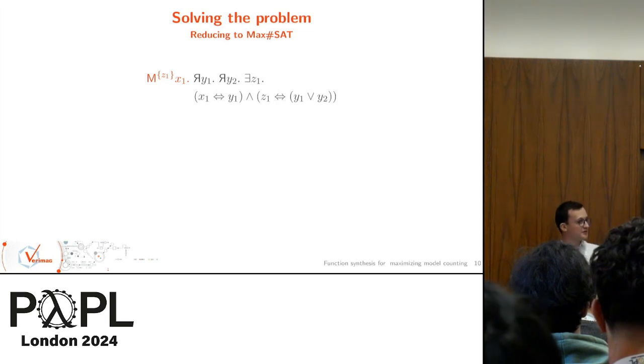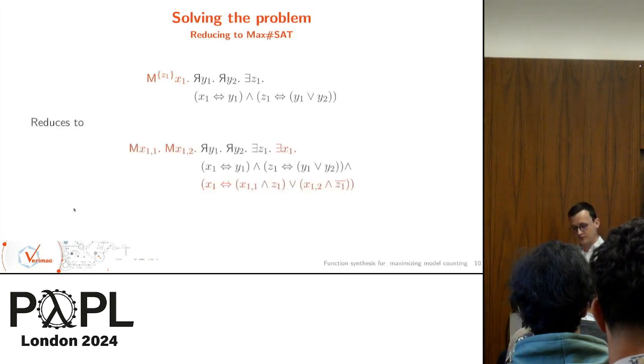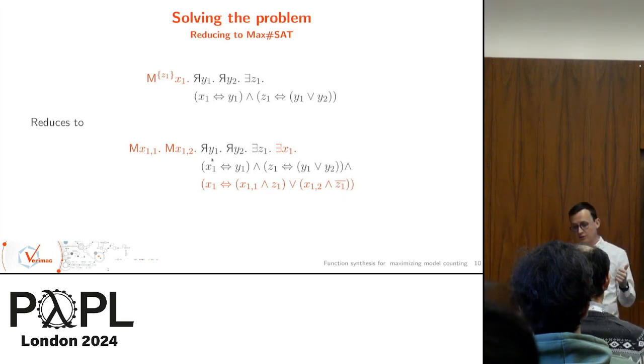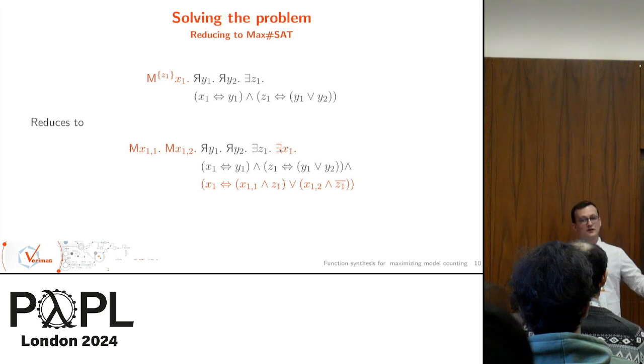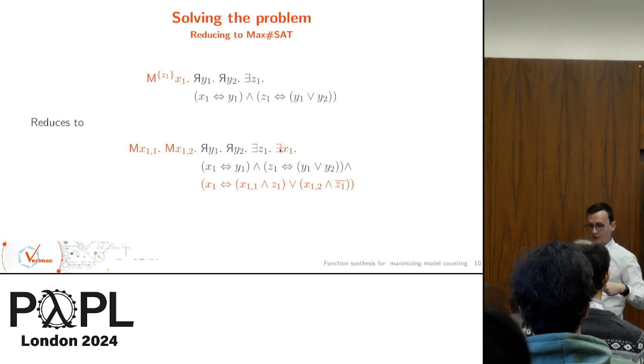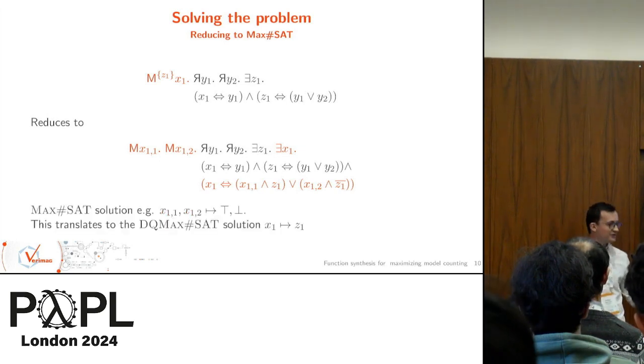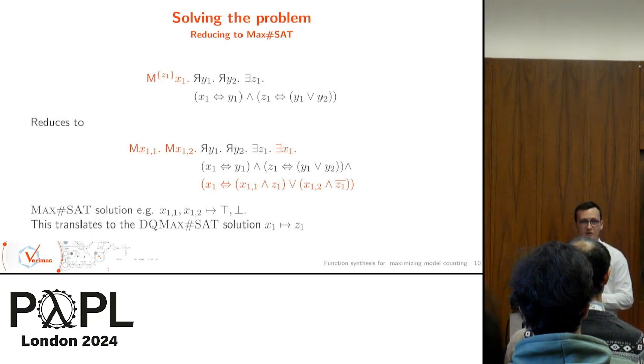Let's walk through our example again. After reduction, we have our two minterms, z and not z, and our two minterm selectors. We have pushed our maximizing variable in the existential set. Now we can give this problem to a MaxSat solver. It will yield us the following assignment, which translates back to the original solution that we had before. The problem is that we have an exponential blowup because we have an exponential number of minterms for a given set of variables.